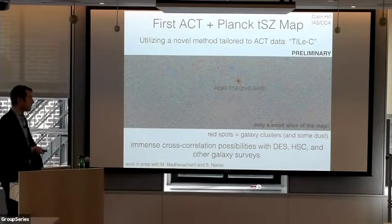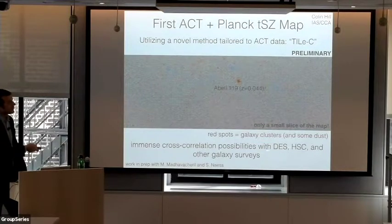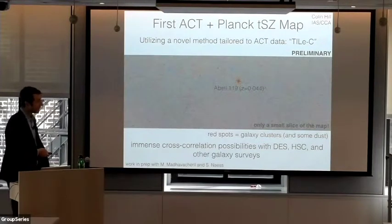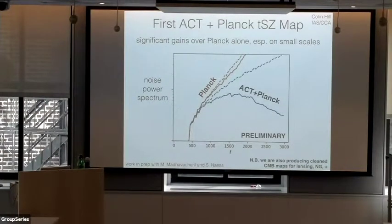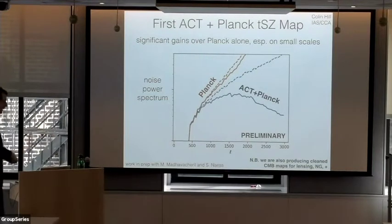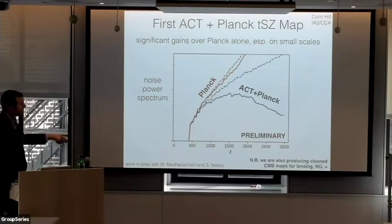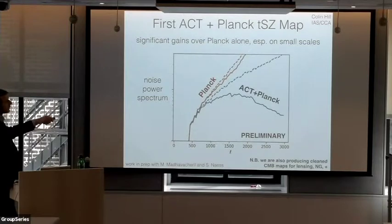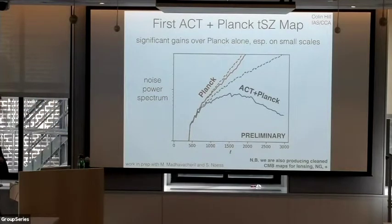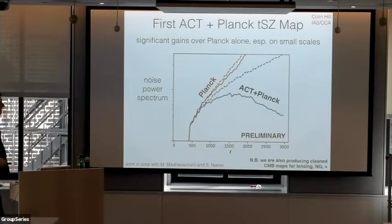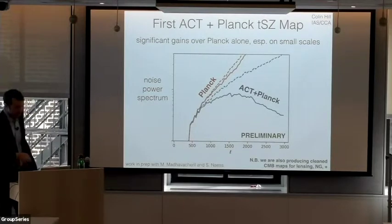There are really immense cross-correlation possibilities with this map — with the Dark Energy Survey, Hyper Suprime-Cam Survey, and other overlapping galaxy surveys. Looking at the noise power spectrum: the Planck y-map noise blows up around multipoles of 1000 (around 10 arcminutes), whereas our ACT plus Planck map noise stays pretty flat until something like l of 5000 or maybe higher — which is fantastic. The same pipeline also lets us produce clean CMB maps for lensing reconstruction and other studies.